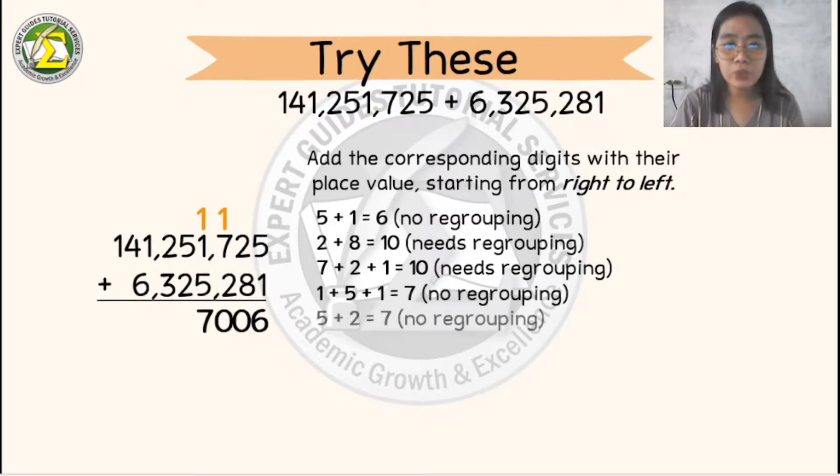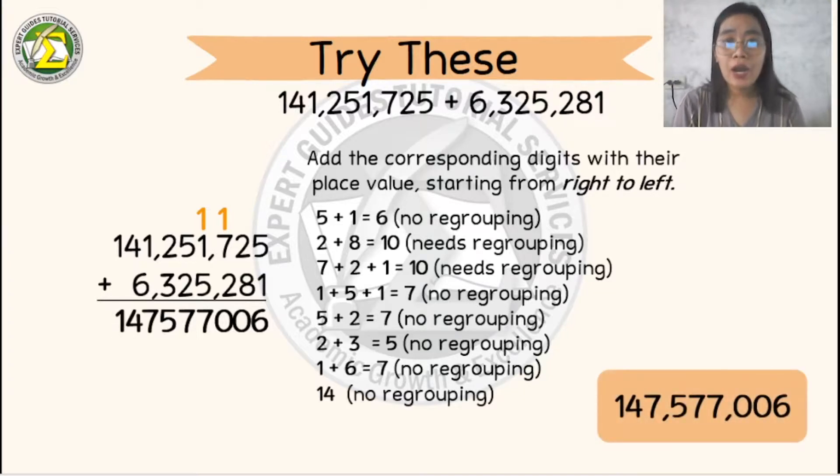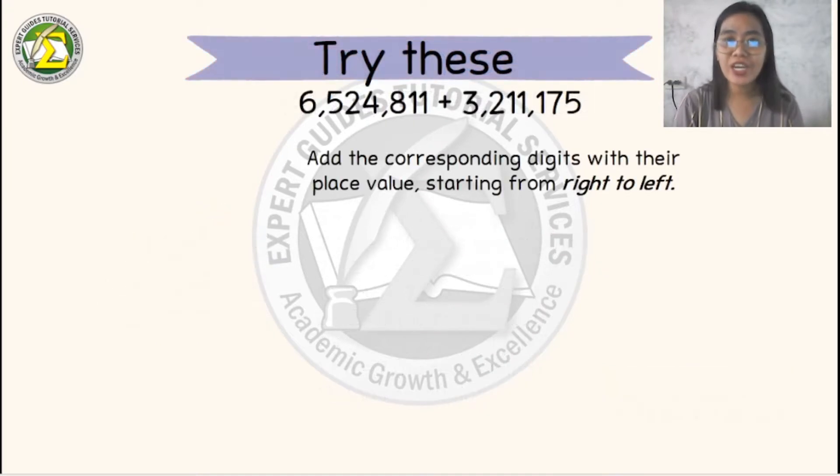5 plus 2 is 7, 2 plus 3 is 5, 1 plus 6 is 7. Bring down 4, and then bring down 1. So therefore, our answer is 147,577,006.